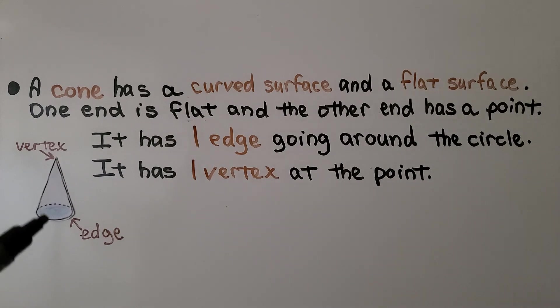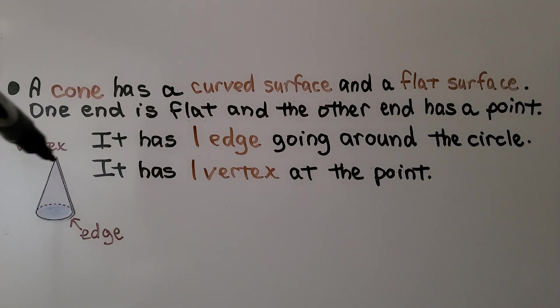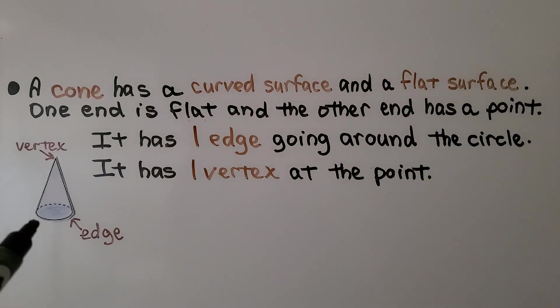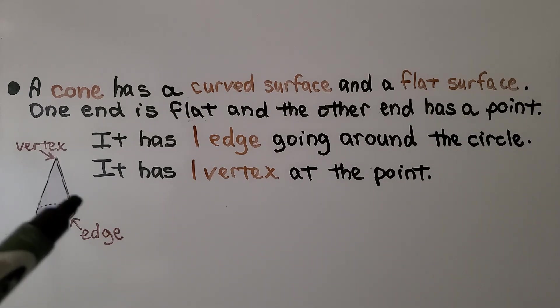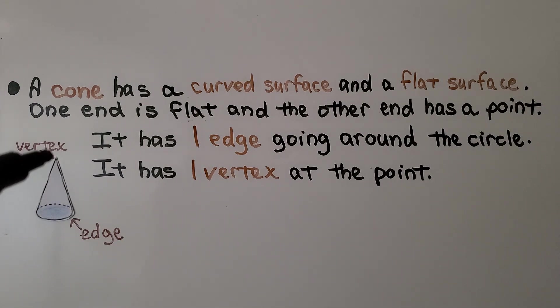A cone has a curved surface and a flat surface. One end is flat and the other has a point. It has one edge going around the circle and it has one vertex at the point.